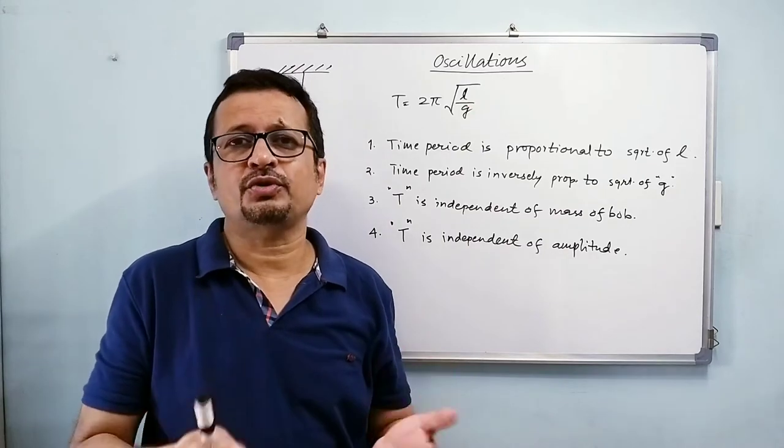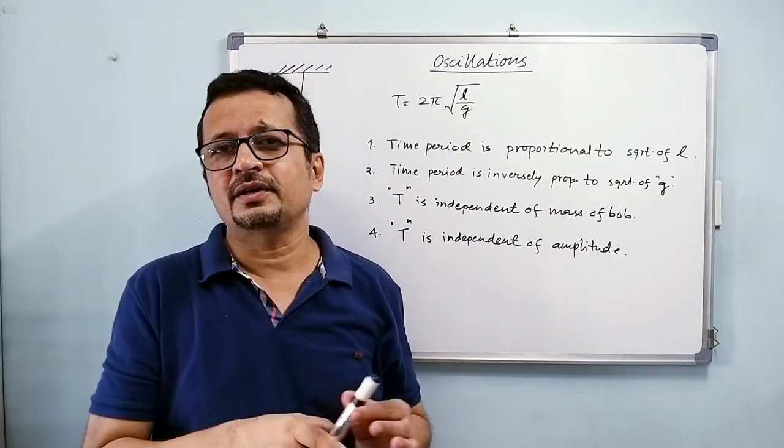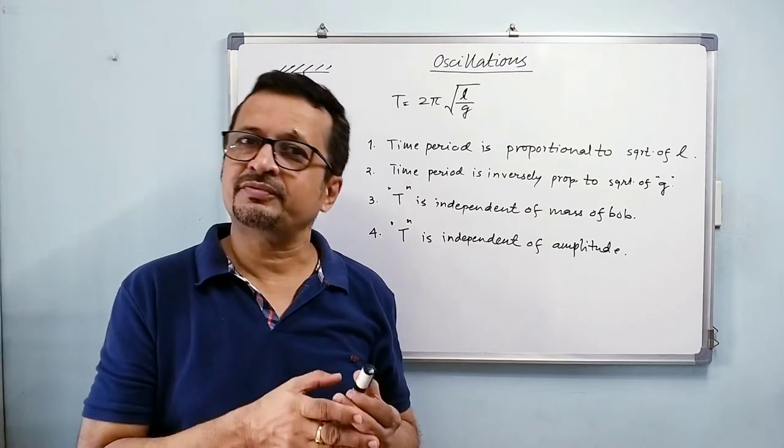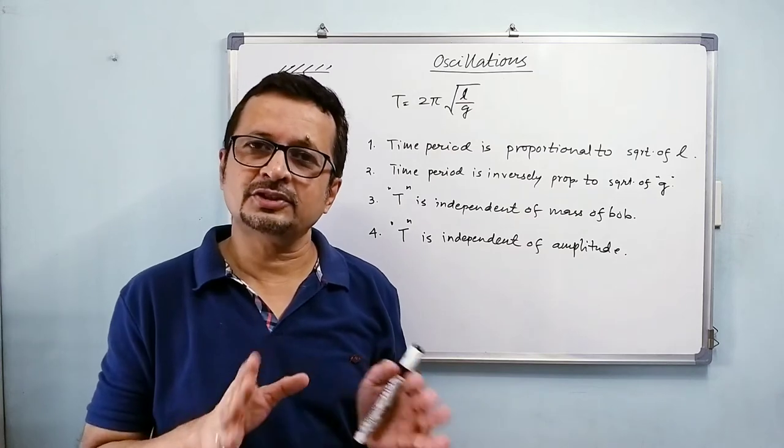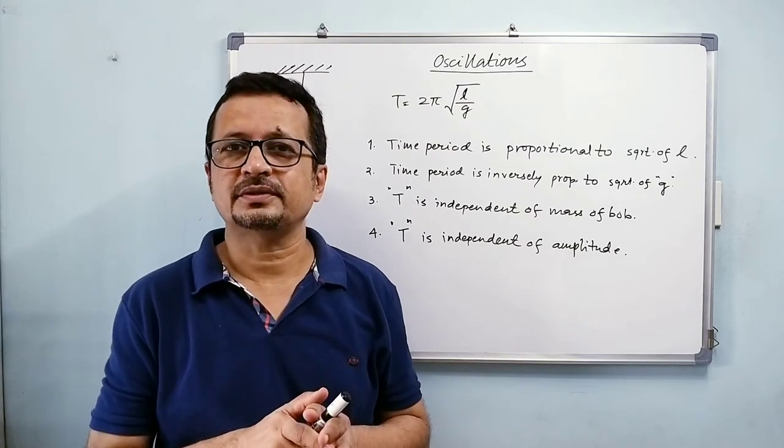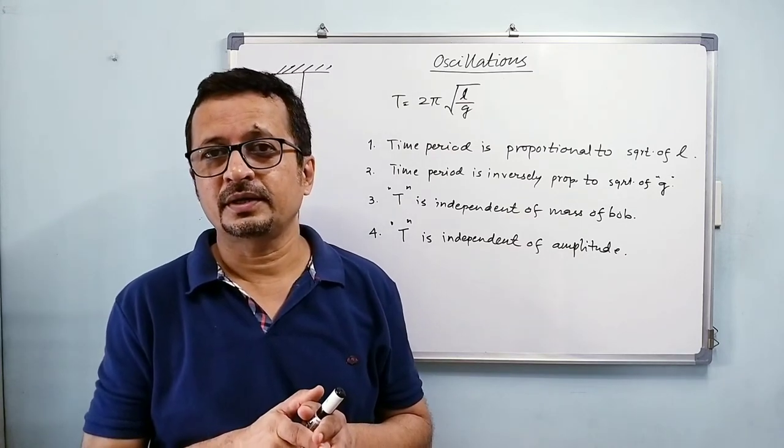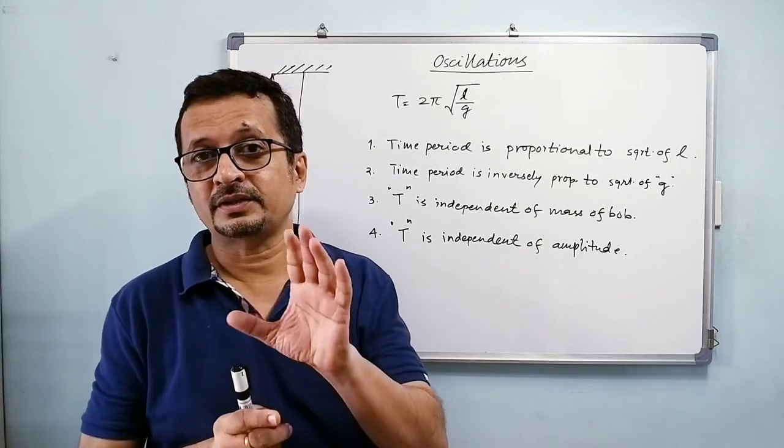We are assuming that there is no friction at the support. Practically friction is going to be there, and that is the reason why a simple pendulum after some time it stops. Its period does not change but then it stops after some time.